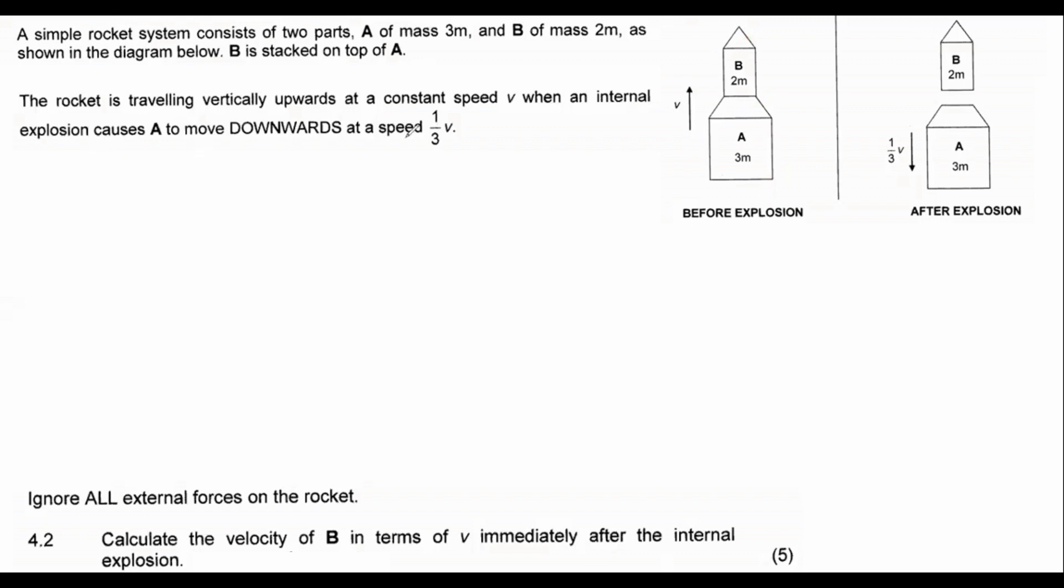So guys, in these types of questions, we're just going to use the conservation of linear momentum. And that's the one that goes something like this: mass of A multiplied by the velocity of A initial plus the mass of B multiplied by the velocity of B initial equals to the mass of A velocity of A final plus the mass of B velocity of B final.